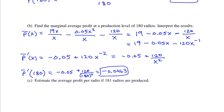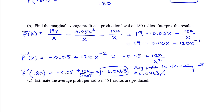The interpretation is that average profit is decreasing at $0.0463 per radio at a production level of 180 radios.